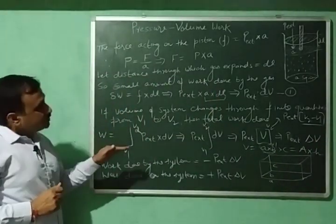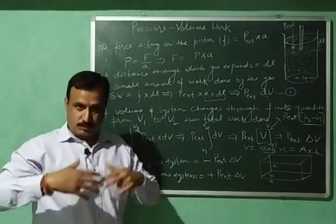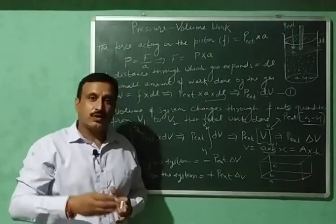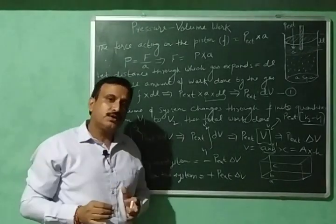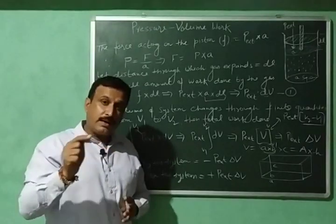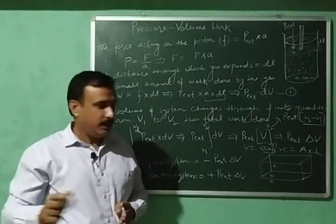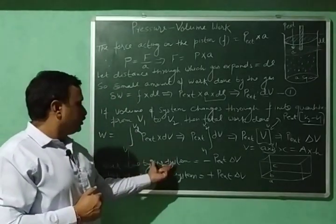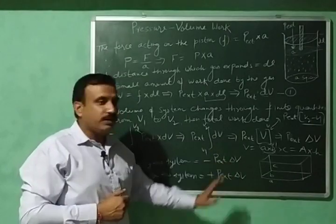This is the work done by the gas, since the gas is expanding — it is the work done by the system. According to the latest sign conventions from IUPAC, work done by the system is given a negative sign. So work done by the system or the gas equals minus P external into delta V.